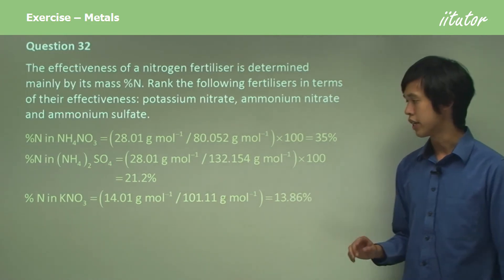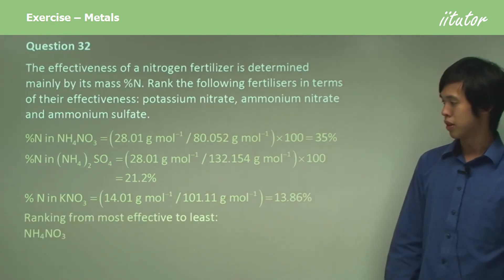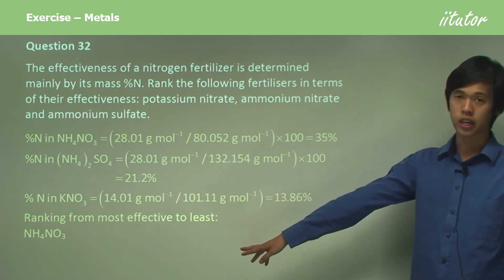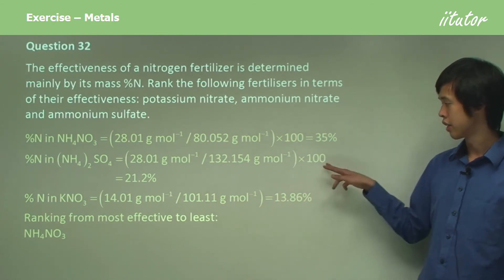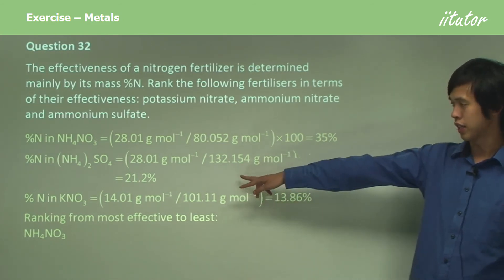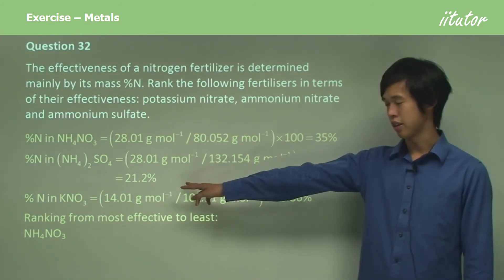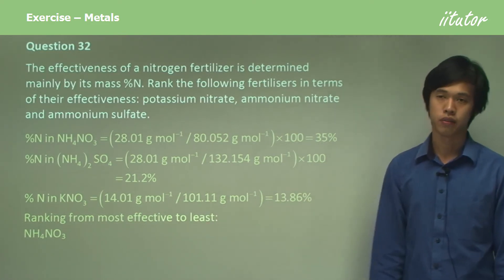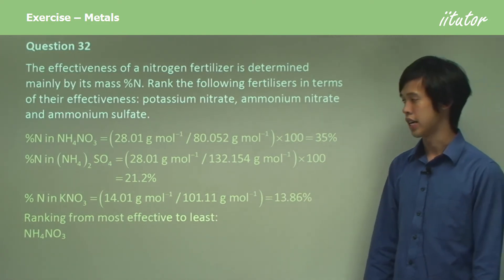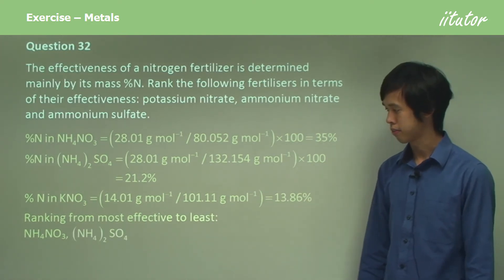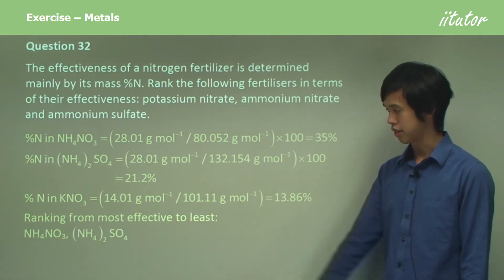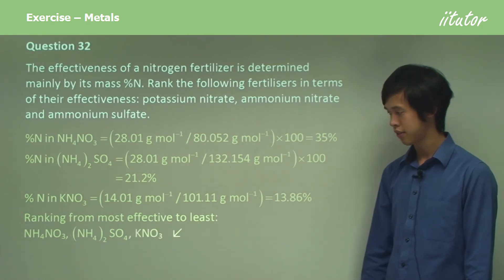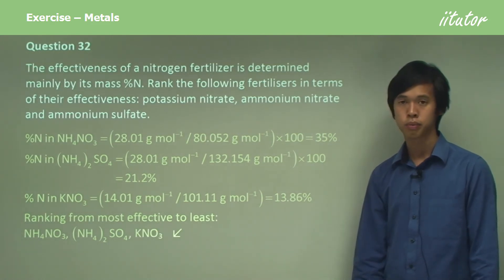So you can see the winner clearly. The most effective is NH4NO3 at 35%. Next most effective is ammonium sulfate at 21.2%, and the least effective is KNO3 at 13.86%.